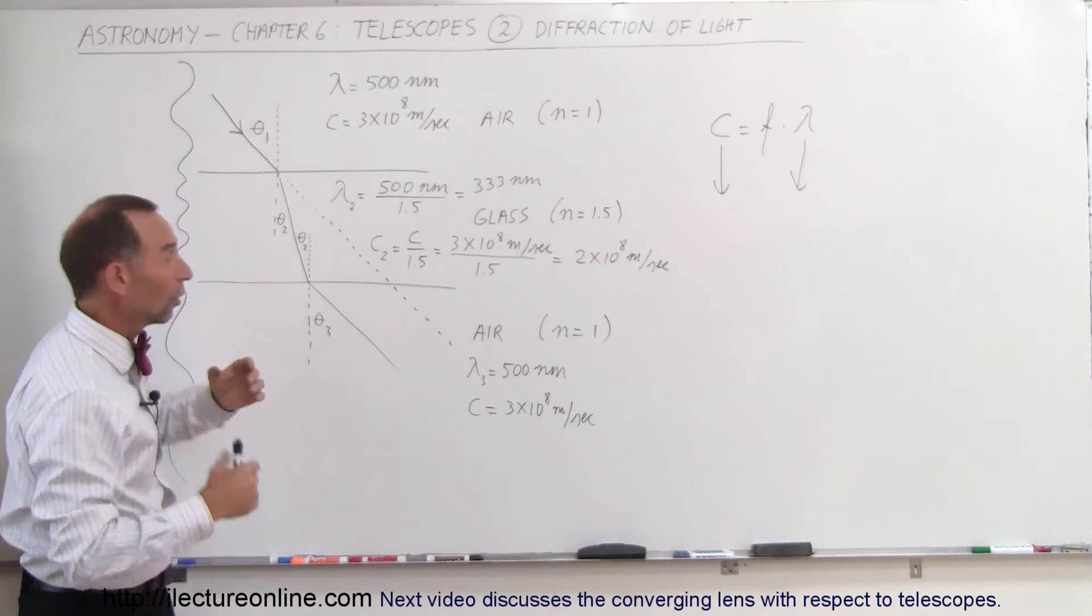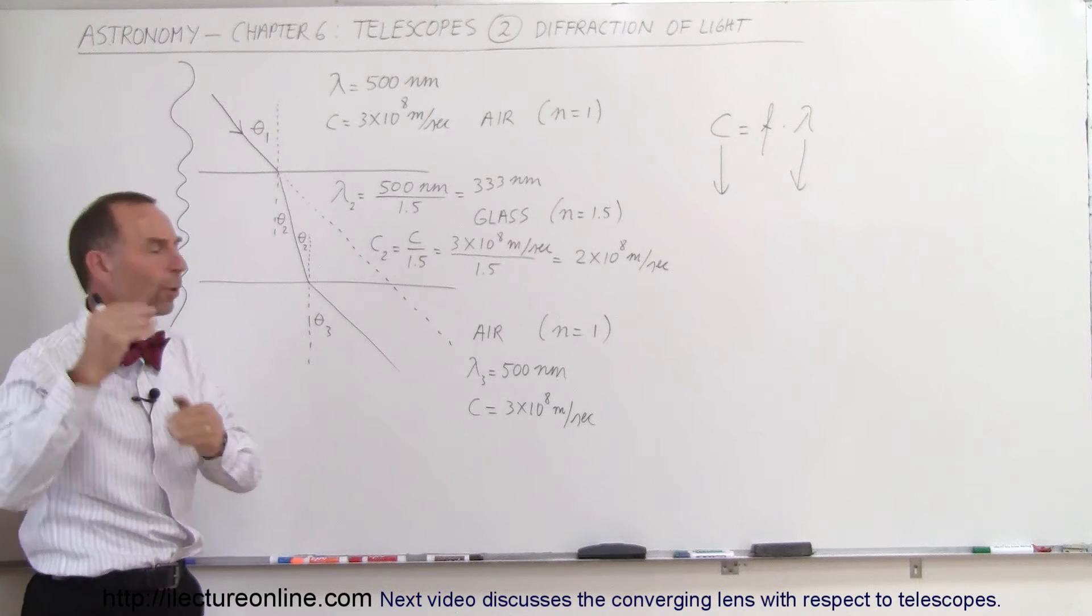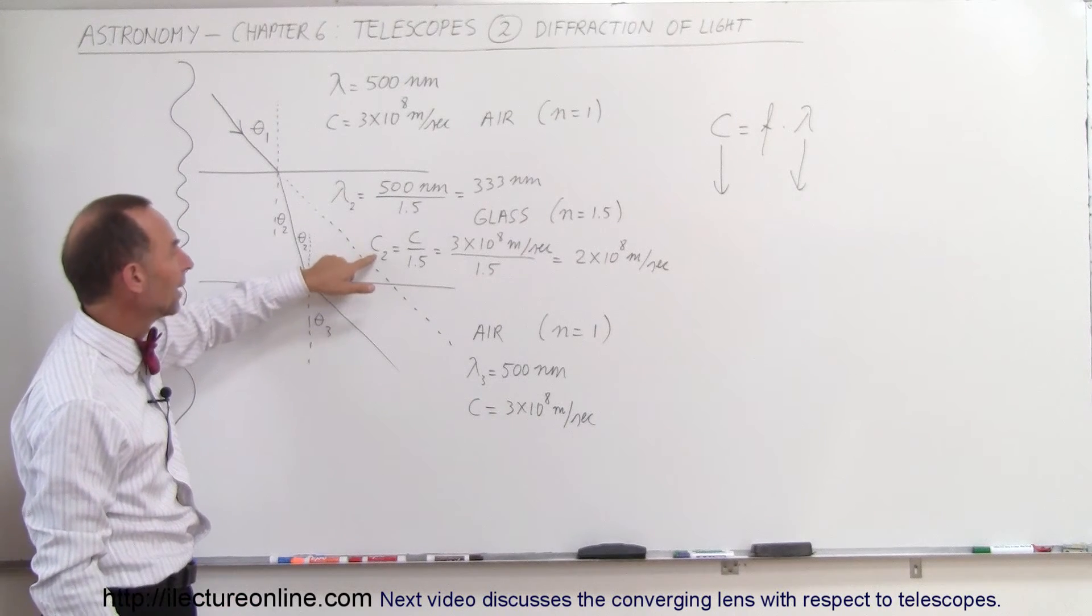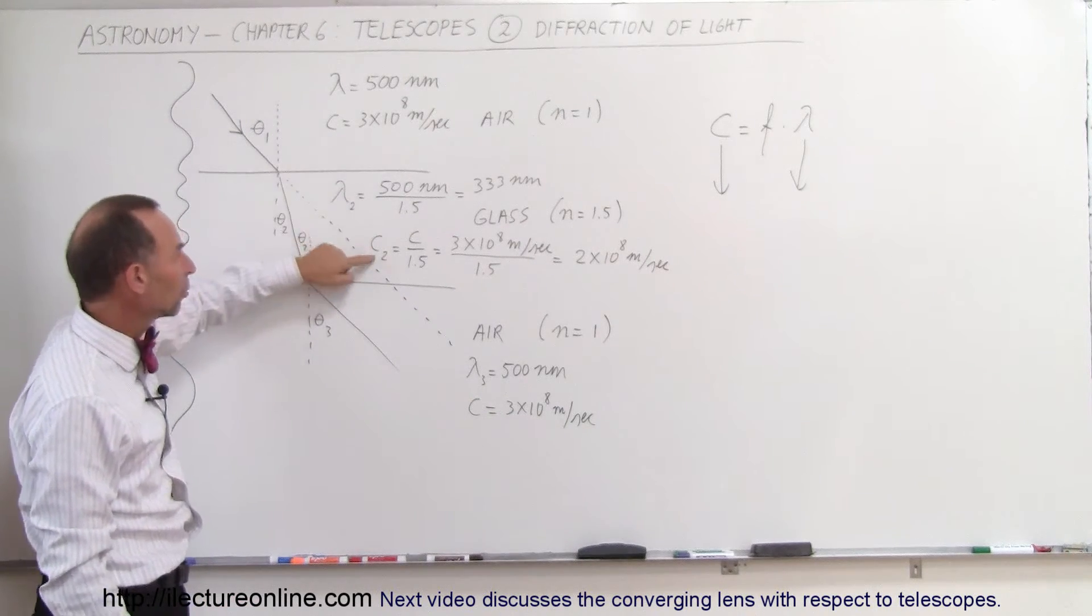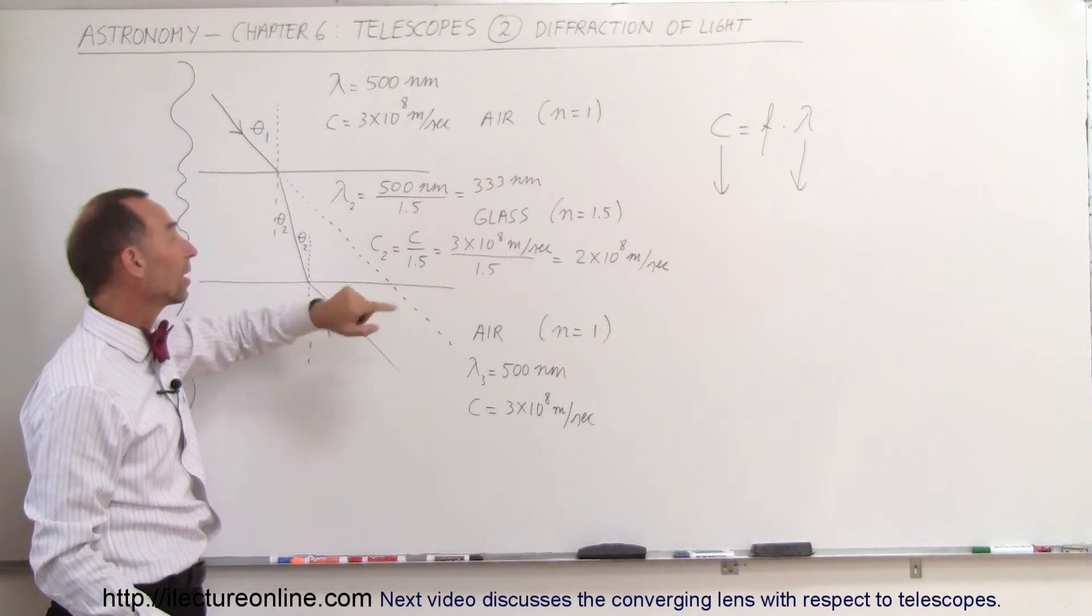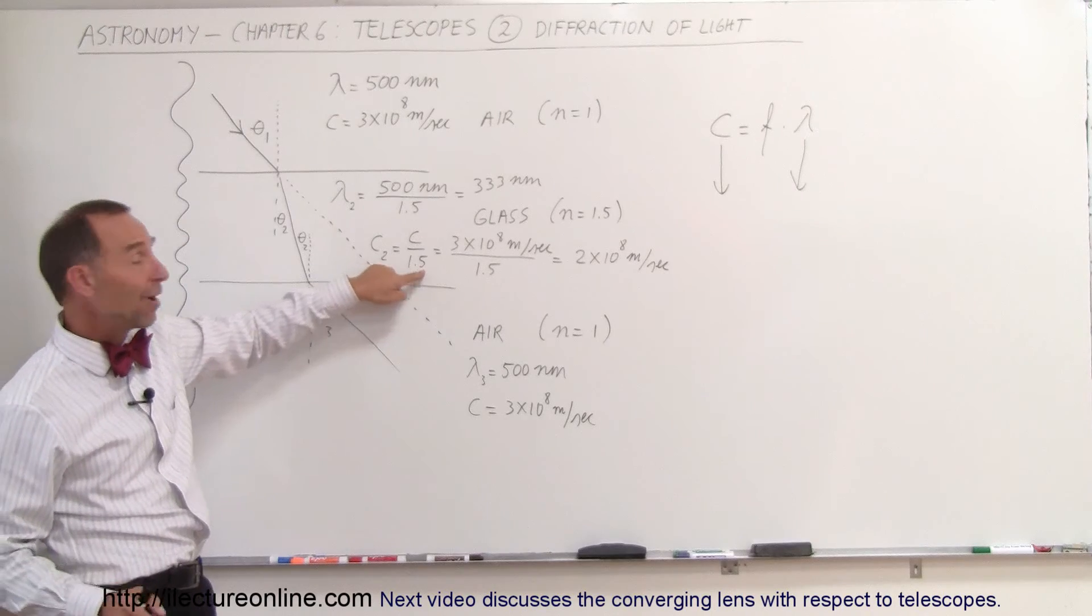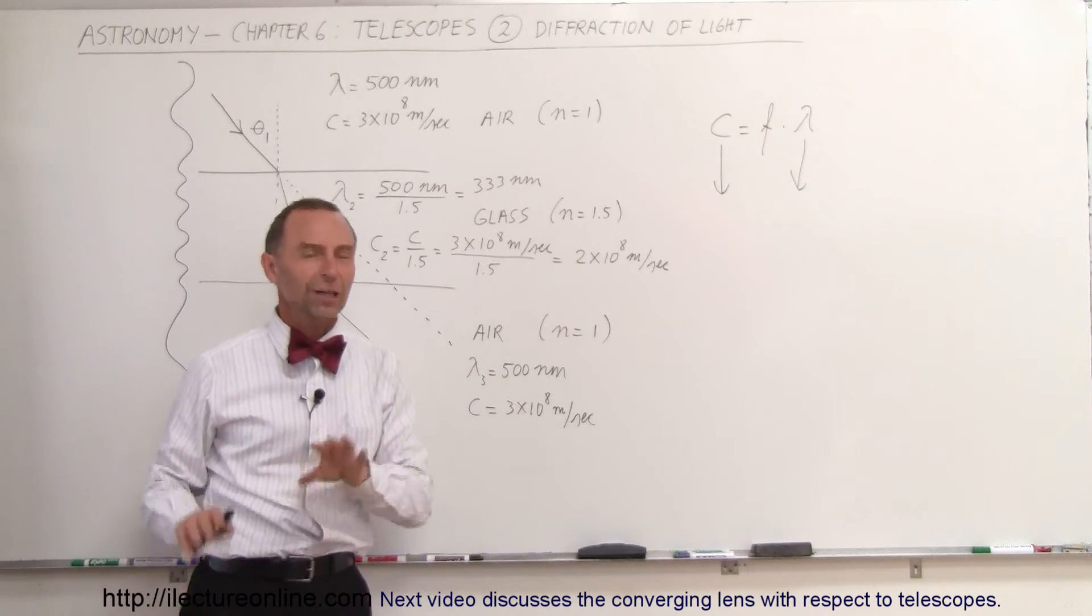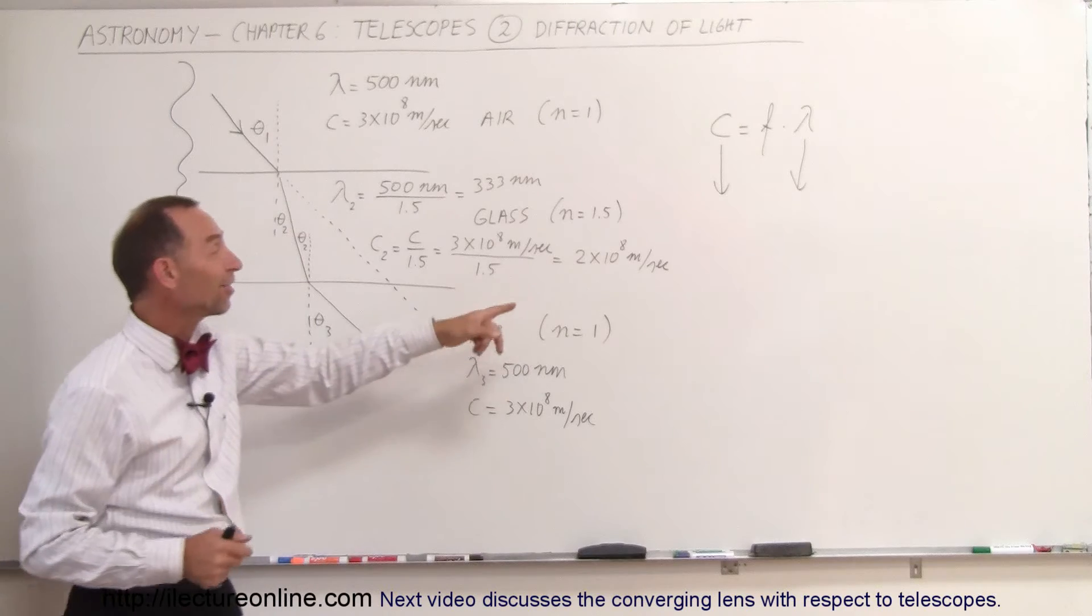But when light enters a region where the index of refraction is greater, it actually slows down. And the speed through the glass will be the speed of light, what it normally is, 3 times 10 to the 8 meters per second, divided by the index of refraction, 1.5. So through the glass it's only moving, because it's still really fast, at 2 times 10 to the 8 meters per second.